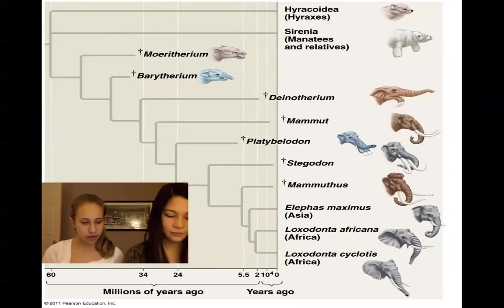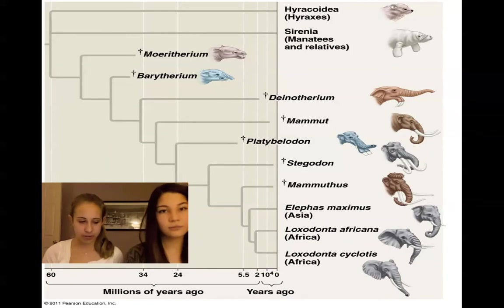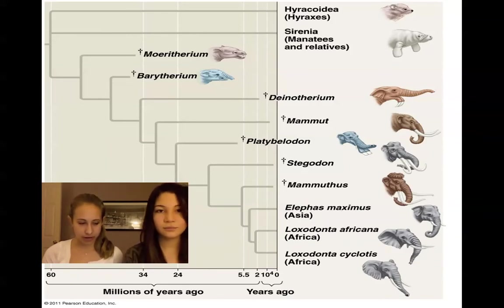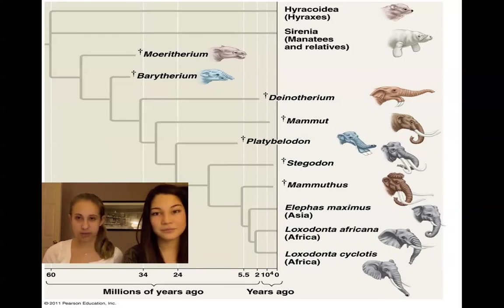Darwin called evolution descent with modification. He reasoned that all species descended from a common ancestor. As shown in this tree diagram, closely related species branch from the same lineages.